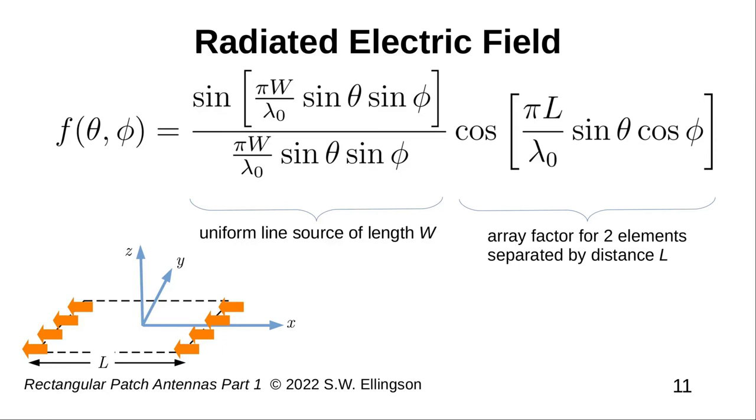Note carefully that the electric field in this model is zero below the ground plane. So we get this expression above the ground plane, and zero below the ground plane. Here is that factor, F theta phi. The first factor is simply the sine argument over argument form, also known as sinc, that we expect to get from a single line source of width W.